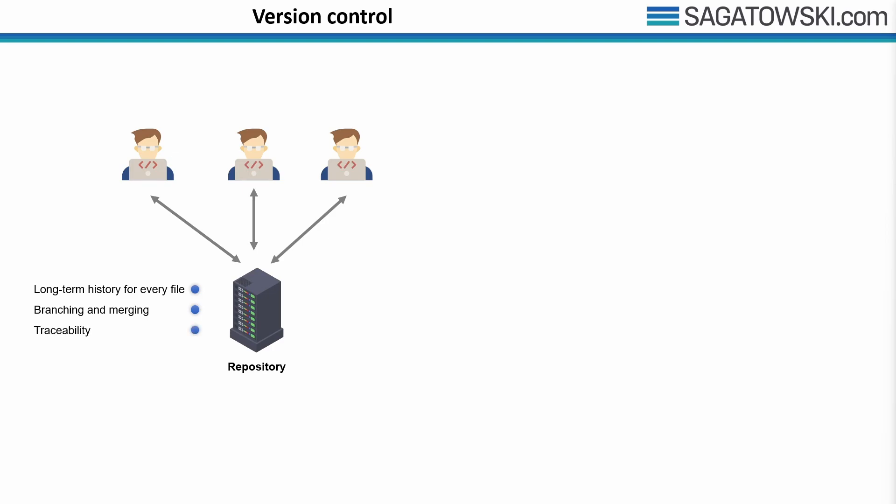The third benefit is traceability — being able to trace each change made to the software and connect it to project management and bug tracking software such as Azure DevOps. Being able to annotate each change with a message describing the purpose and intent can help when you need to go back in time and see what changes you have done.